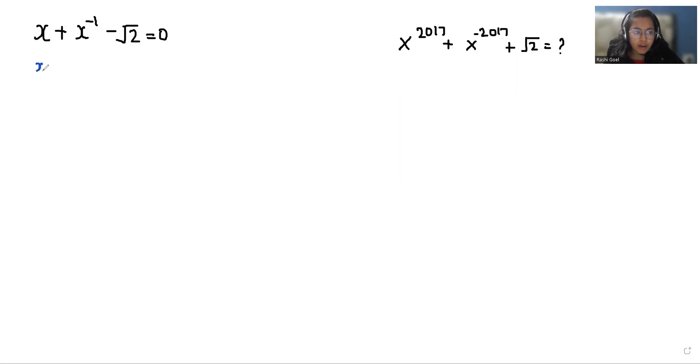First I can write this equation as x plus 1 by x equals root 2, and I am considering it as equation number 1. Similarly, what we have to find, we can also write this as x power 2017 plus 1 by x power 2017 plus root 2.